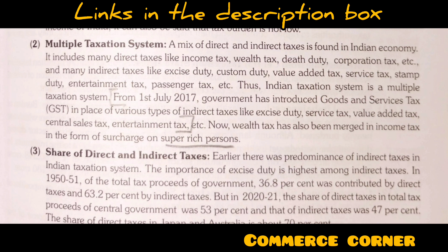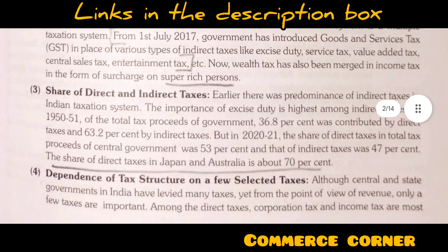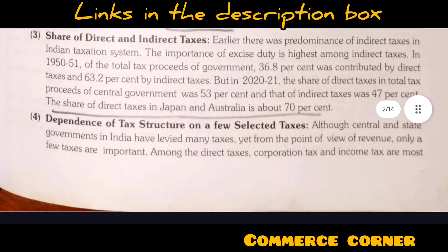The next point is the share of direct and indirect taxes. In 1950-51, there were 36.8% direct taxes and 63.2% indirect taxes. If we talk about 2020-21, there were 53% direct taxes and 47% indirect taxes. As a comparison, in countries like Japan and Australia, the share of direct taxes is 70%.